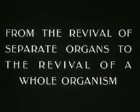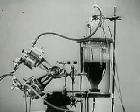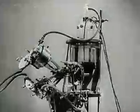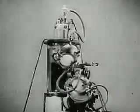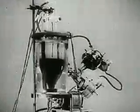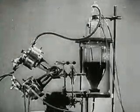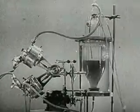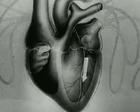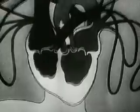The revival of individual organs enabled scientists to proceed to experiment on reviving the whole organism. The revival of the whole organism can be achieved with the help of an apparatus called the autojector. The autojector carries out the functions of the heart and lungs. As we know, the heart, by its rhythmical contractions, supplies the body with arterial blood rich in oxygen.